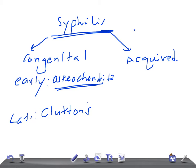In the secondary stage, transient polyarthritis and polyarthralgia involving the large joints occur.